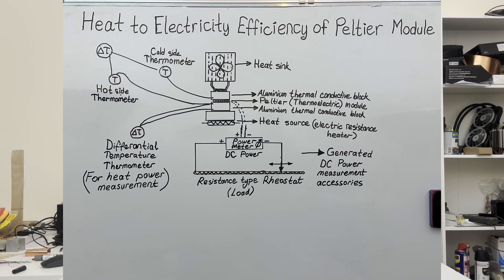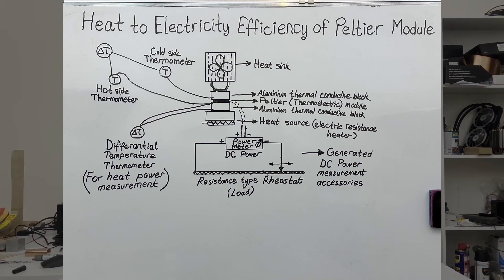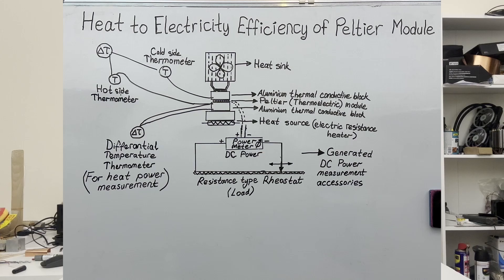An electric resistance heater will be used as a heat source, and the heat dissipation — the CPU cooler — will be used as a heat sink. At the same time, the voltage, current, and power values will be measured while discharging the generated electricity into a rheostat.